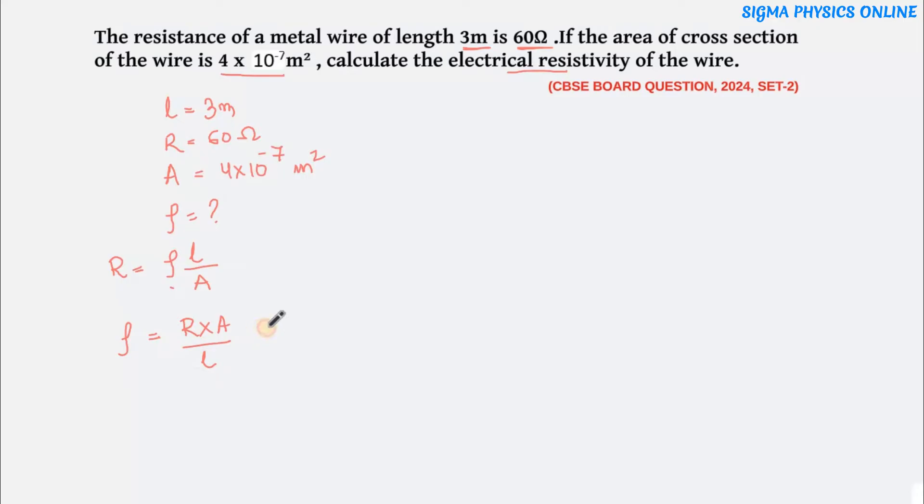Now substituting the values we get here, R is the resistance which is 60 ohms. Then we have the area of cross section given as 4 into 10 to the power minus 7 meter square by length of the wire is given as 3 meters. Meter and meter over gets cancelled. So, it is 80 into 10 to the power minus 7 ohm meter, which is 8 into 10 to the power minus 6 ohm meter.